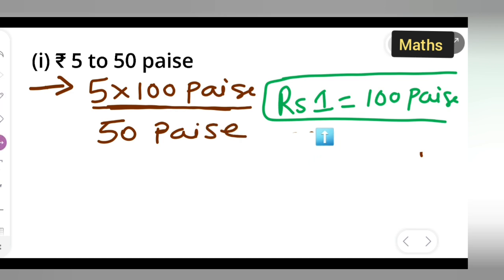As you can see, 5 multiplied by 100 paise gives us 500 paise. So we write this as 500 over 50.